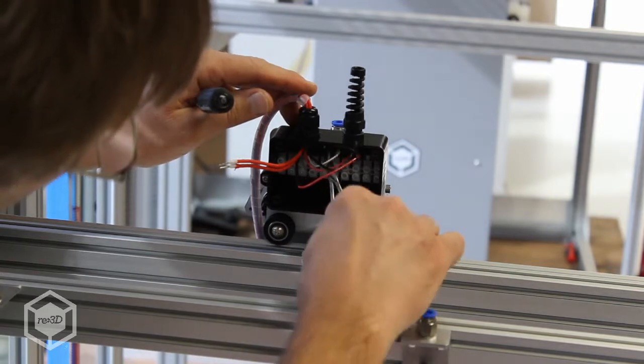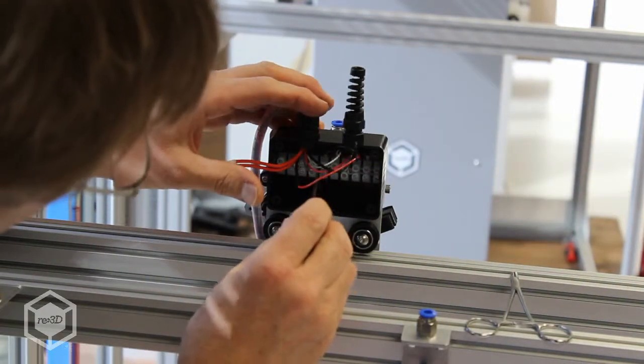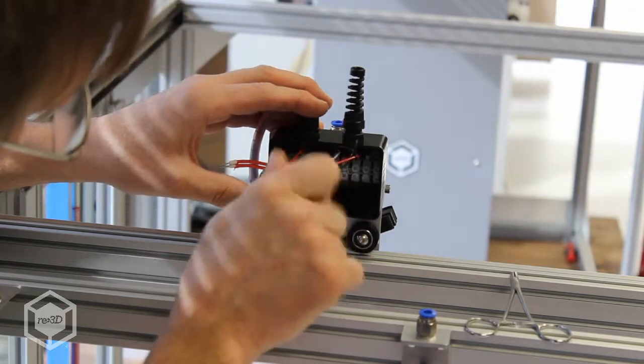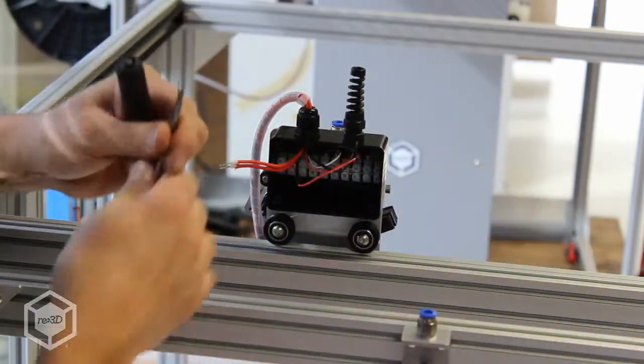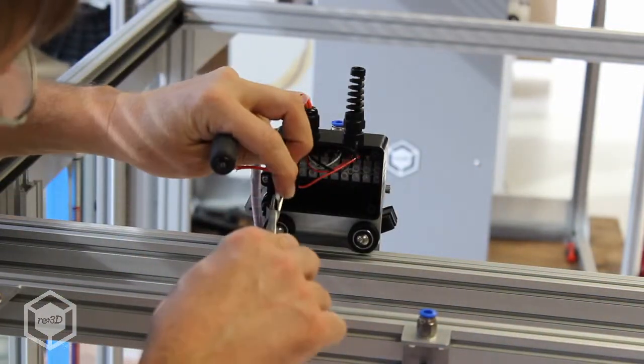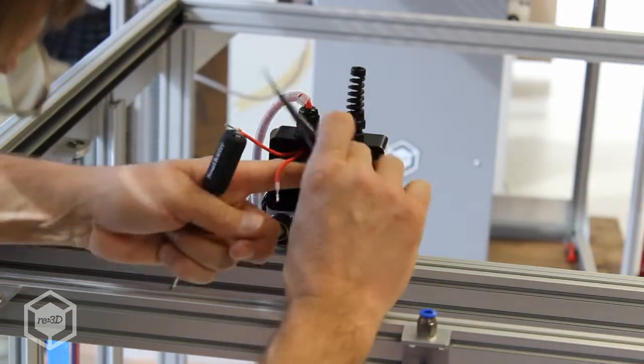And then the next wires, I'm skipping one, so just kind of clumping them together. A little bit harder to make a mistake. It doesn't matter which of the two larger red ones of these go to the heater cartridge on the hot end.